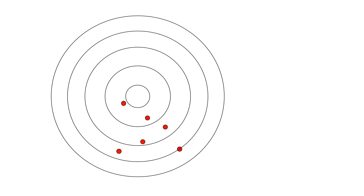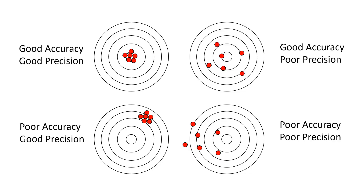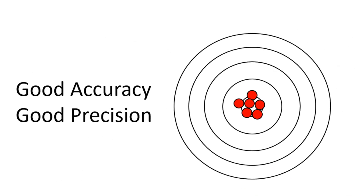Let's look at one more example. In this case, my precision is poor and my accuracy is poor — neither accurate nor precise. It's not accurate because the average of all my shots is not on the bullseye, and it's not precise because my shots are all spread around different places.